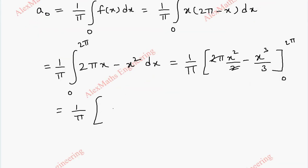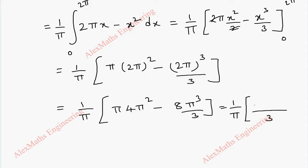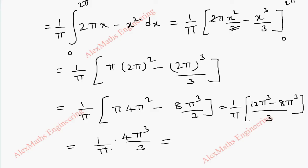Substituting x = 2π: the first term becomes π·(2π)² and the second term becomes (2π)³/3. This gives (1/π)[π·4π² - 8π³/3]. Taking LCM = 3, we get (1/π)·(12π³ - 8π³)/3 = (1/π)·(4π³/3). After cancelling π, we get a₀ = 4π²/3.